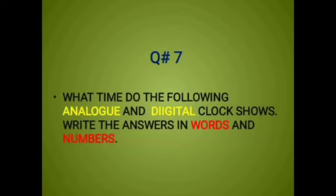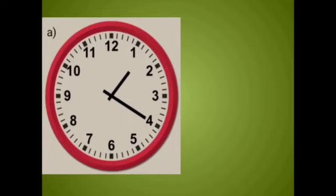Let's study more details. In question number 7 of your book, the question is, what time did the following analog and digital clocks show? If you open question number 7, then there will be two types of clocks. Let's solve part A first of all. Here you can see the time on your screen.